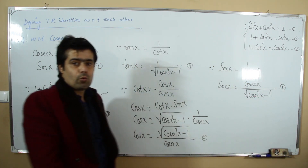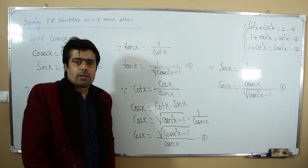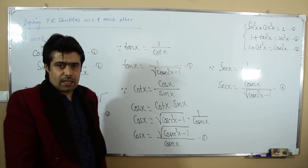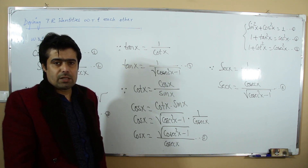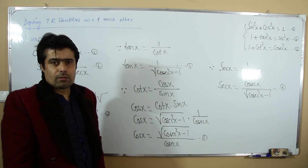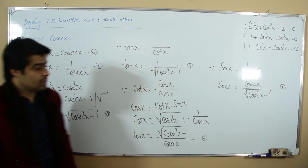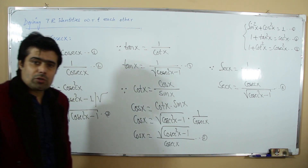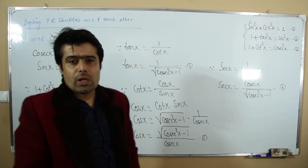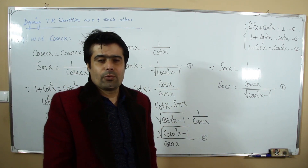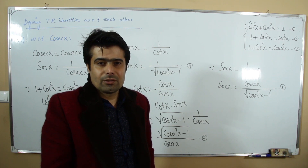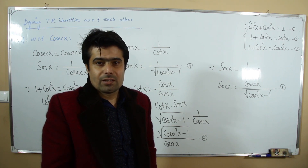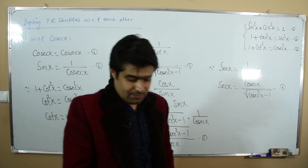I think we have proved six times six — that is, 36 relations in total. That was all we had in this fourth lecture on the second chapter of trigonometry. See you soon. Allah Hafiz.